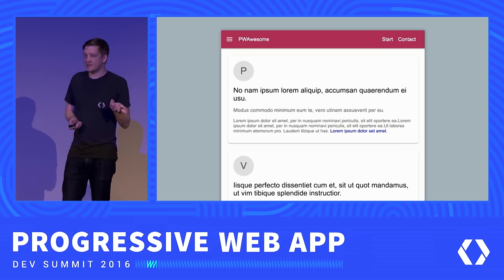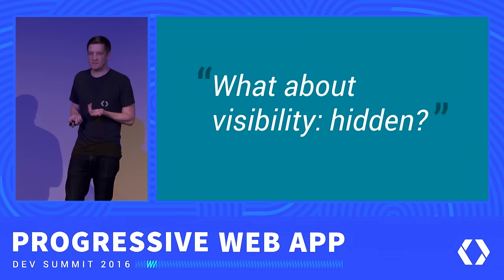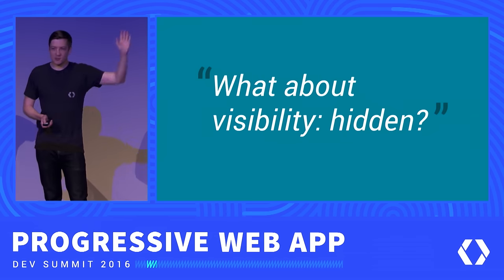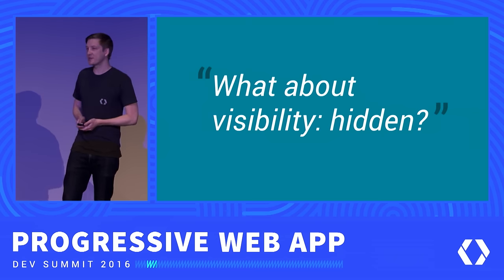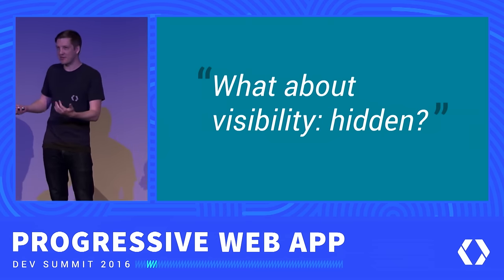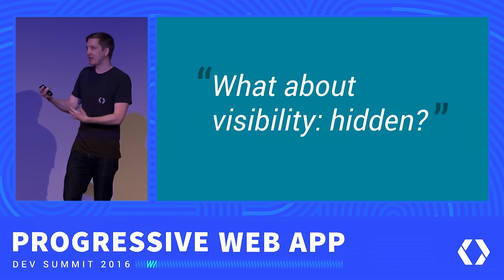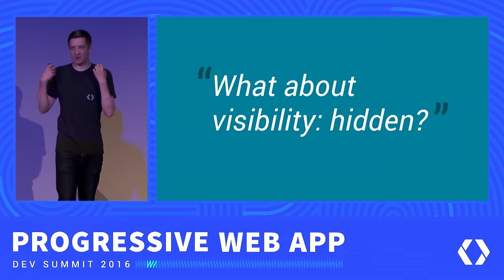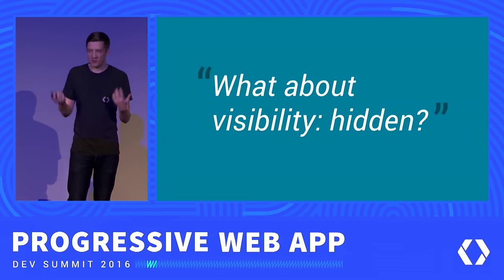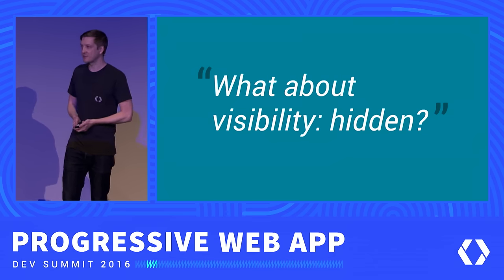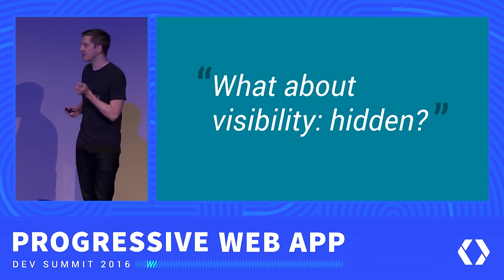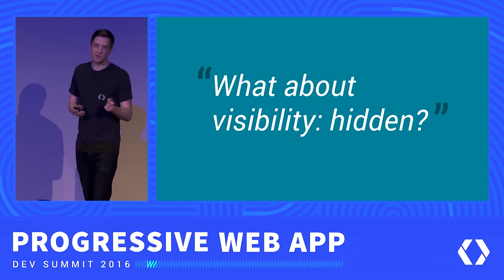How do we fix this? The first idea is to set it to visibility hidden. This would work, but if you recall in Paul's talk, he talked about primed elements and the FLIP technique — having elements already in the DOM ready to go. If we set them to visibility hidden, we destroy the compositor layer and have to do all that work again every time the user presses a button. This is frustrating, because developers and users should not have to choose between 60 frames per second animations and good accessibility.